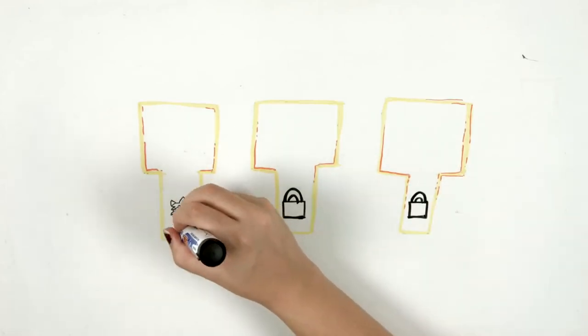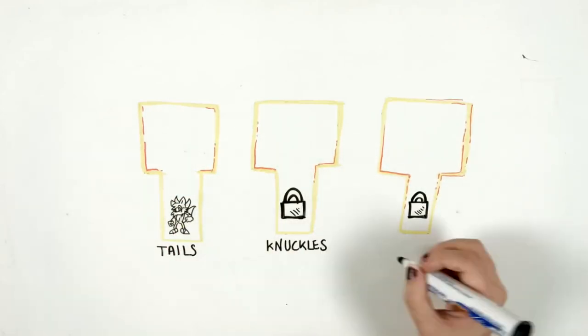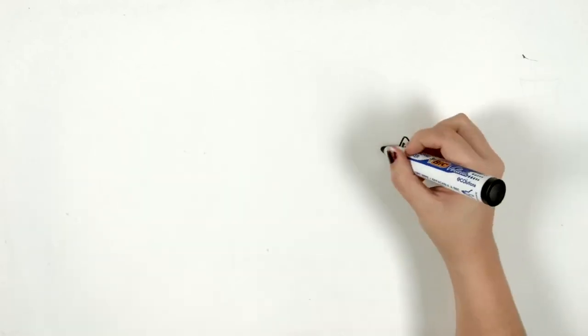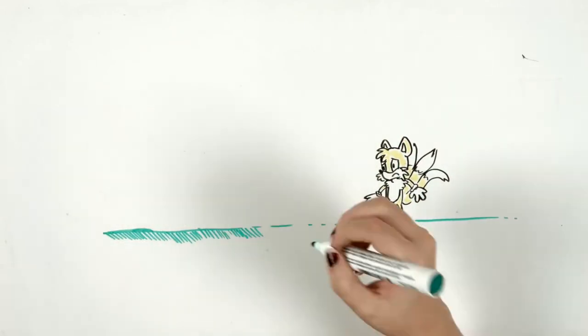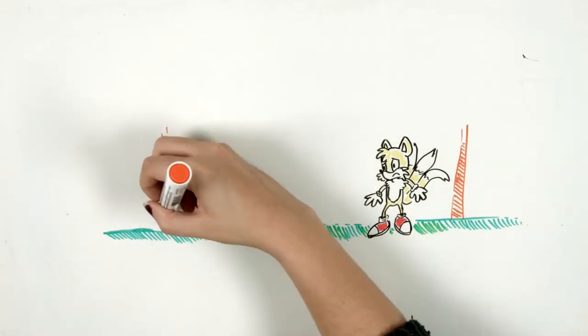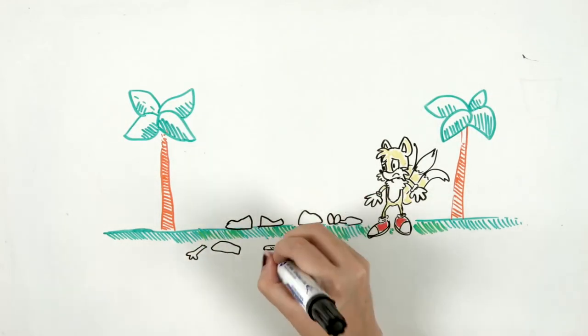He decided to choose Tails. Before the game started, it froze for a few seconds and he heard a creepy laugh. Finally, Tails appeared on the screen and Tom started playing. What was odd was that as Tails was running along the level, there was nothing but flat ground and trees. Suddenly, some animals started to appear on the screen.